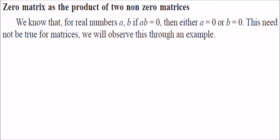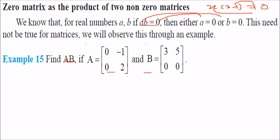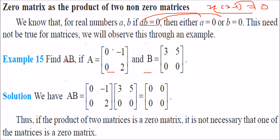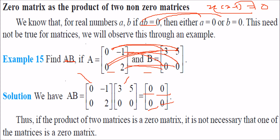We can also get a zero matrix as the product of two non-zero matrices. For real numbers, if A·B = 0, then either A = 0 or B = 0. But for matrices, this may not be true. For example, multiplying matrix A and matrix B where neither is a zero matrix: 0·3 + (−1)·0 = 0, 0·5 + (−1)·0 = 0, 0·3 + 2·0 = 0, 0·5 + 2·0 = 0 — the product is the zero matrix even though A and B are not zero matrices.